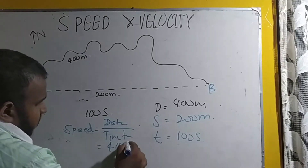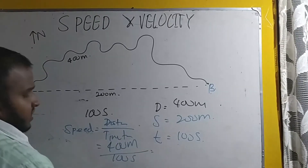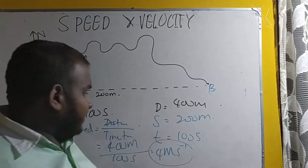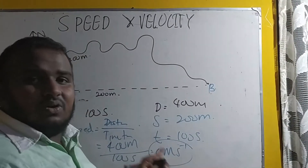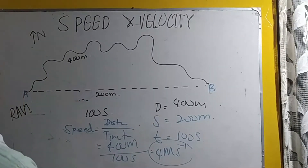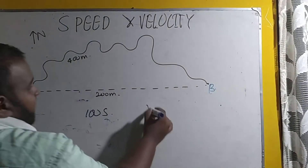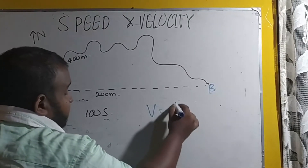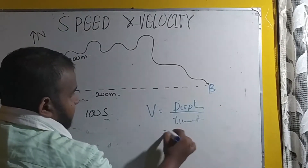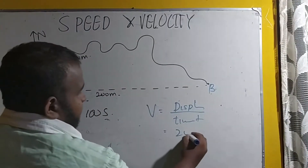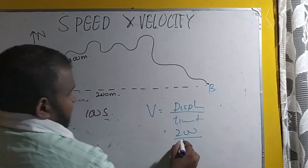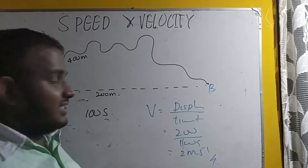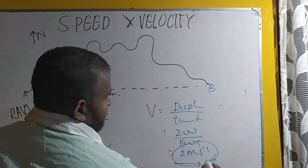400 meters divided by 100 seconds gives a speed of 4 meters second minus one. There is no compulsory direction to mention, because it is a scalar quantity. Speed is 4 meters second minus one. Finally, the velocity will be displacement divided by time taken: 200 divided by 100 equals 2 meter second minus one. But here I need to mention the direction — 2 meter second minus one, direction east.